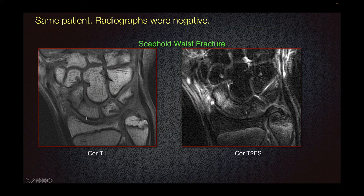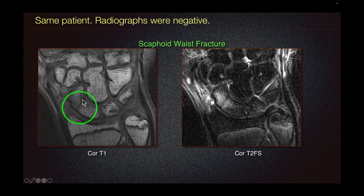The patient in this case, however, did undergo MRI without contrast. MRI remains the gold standard for the diagnosis of occult scaphoid fractures. Here we can see a linear band of hypointensity at the waist of the scaphoid, and on our coronal fluid-sensitive images, we can see surrounding edema in the scaphoid, consistent with a scaphoid waist fracture.